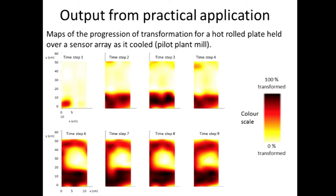Here's an example using an array of sensors for rolled plate material in a pilot plant mill at Tata Steel, coming out hot and going over a bed of an array of sensors. We can map the transformation on a colour scale — both as it's happening over time and spatially, in terms of how cooling might affect it. Also importantly, electromagnetic techniques are not sensitive to water spray or dust, so we can put them in quite aggressive environments — which is a nice advantage.